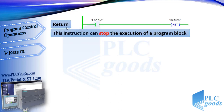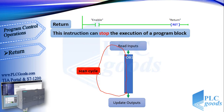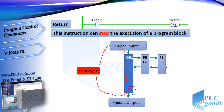The next instruction is return. This instruction can stop the execution of a program block. When a CPU is in running mode, it reads and stores the state of all inputs, then executes its program from the first network to the last in the main block OB1, then updates the state of all outputs. The CPU repeats this cycle, which we call the scan cycle. If a return instruction is used in the main block, the CPU won't execute the remaining networks — it exits from the main block and repeats its scan cycle. If we use the return instruction in a function block or function, the CPU will return to its previous block.